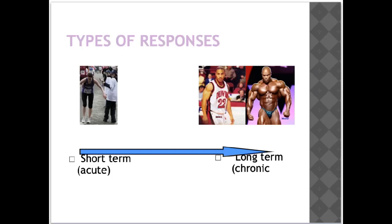The two examples I've used in the images above are a runner who is fatiguing mid-race as an example of acute responses occurring within the body, and a before and after picture of the current Mr. Olympia champion Phil Heath, highlighting some chronic adaptations that have occurred to his body over a long period of time.